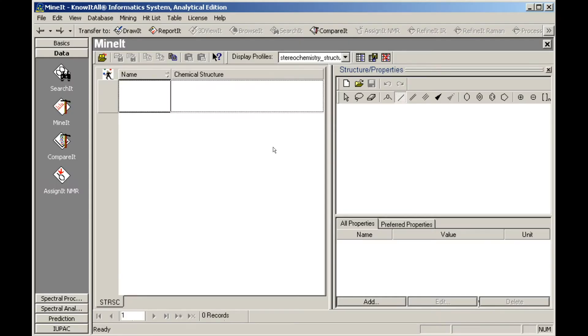We begin with a new user database that has no data records. You can add a structure to the database by importing a file or by drawing the structure in the Structure Properties pane.